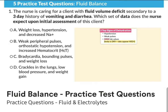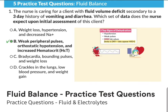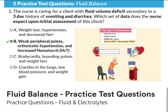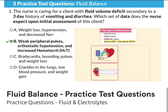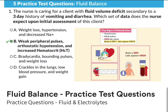Option B is correct: weak peripheral pulses, orthostatic hypotension — that low blood pressure — and increased hematocrit. This is perfect. The top three signs of dehydration are hypotension, weak pulses, and high lab values. When the body is dry, the labs appear high.